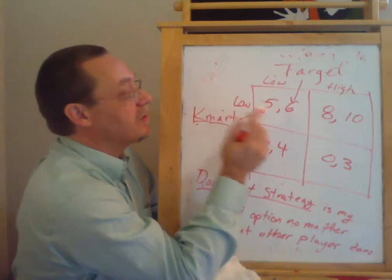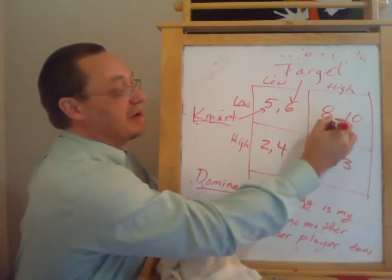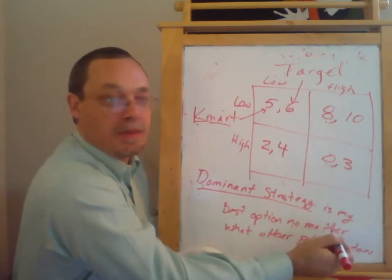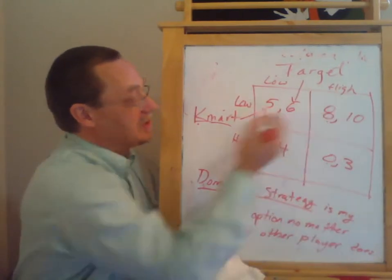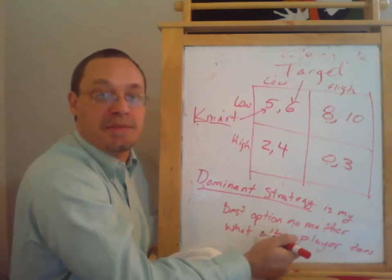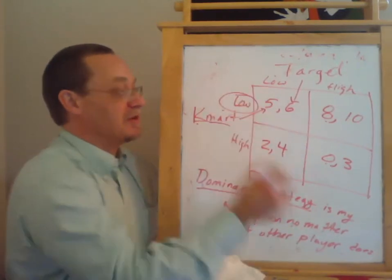What if Target plays high? In that case, Kmart has a choice between playing low and getting eight and playing high and getting zero. So in this case, if Target plays high, Kmart should play low. So yes, Kmart does have a dominant strategy in this game. The dominant strategy for Kmart is to play low.